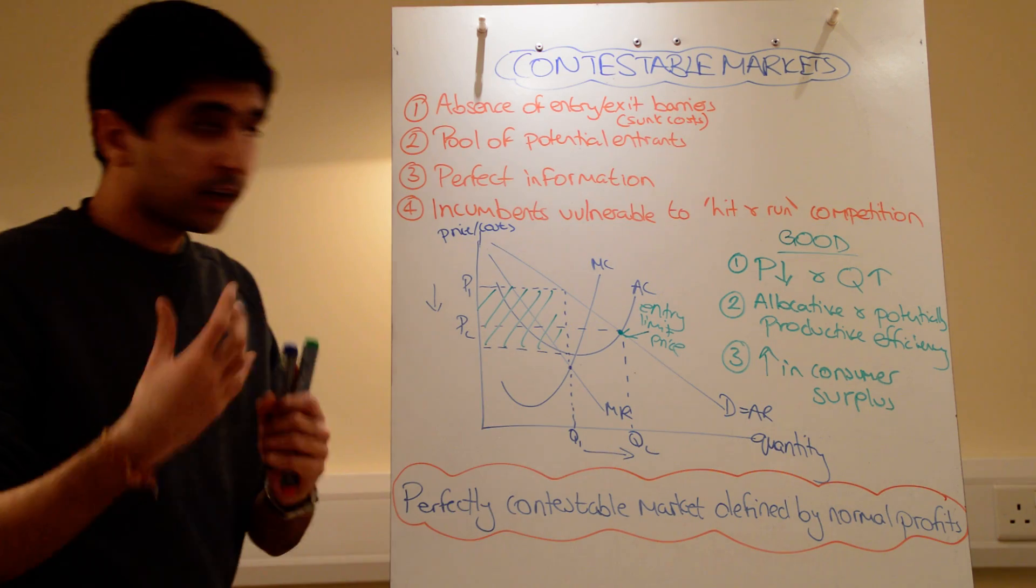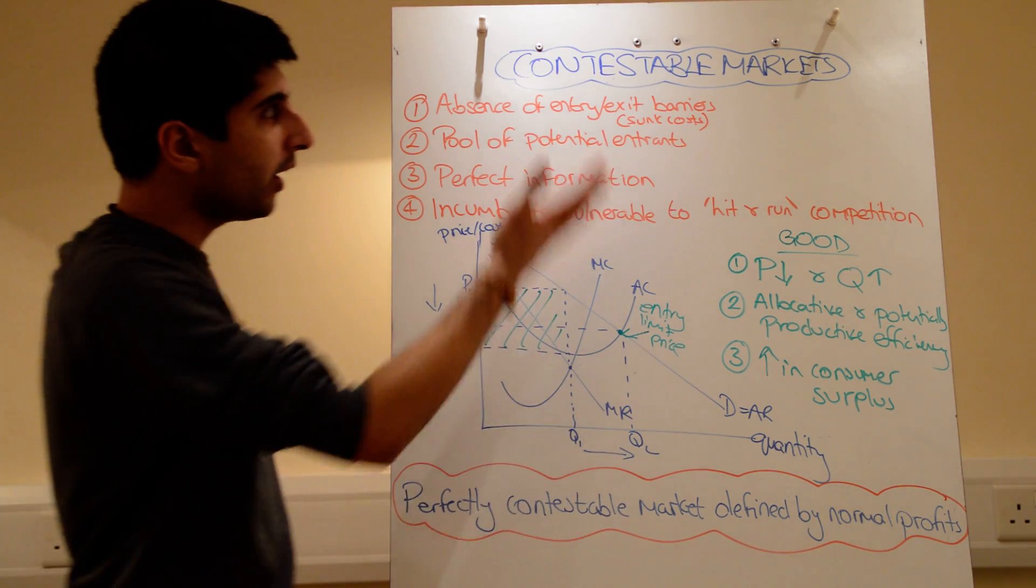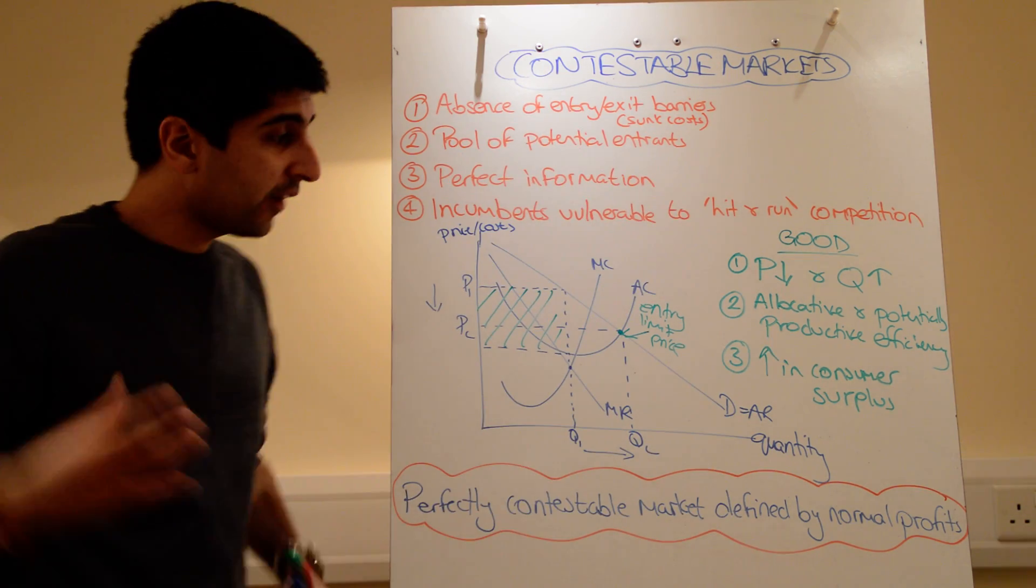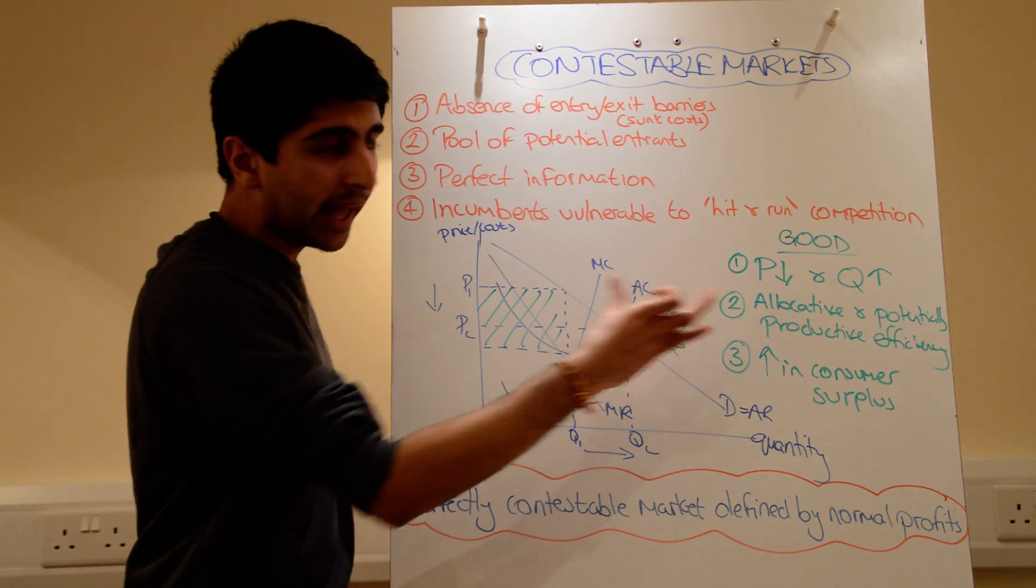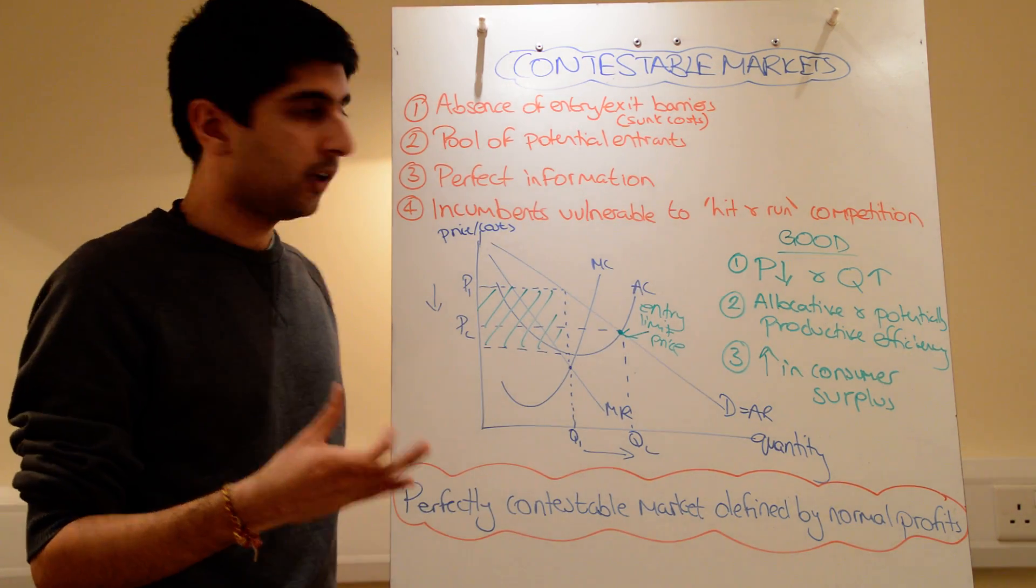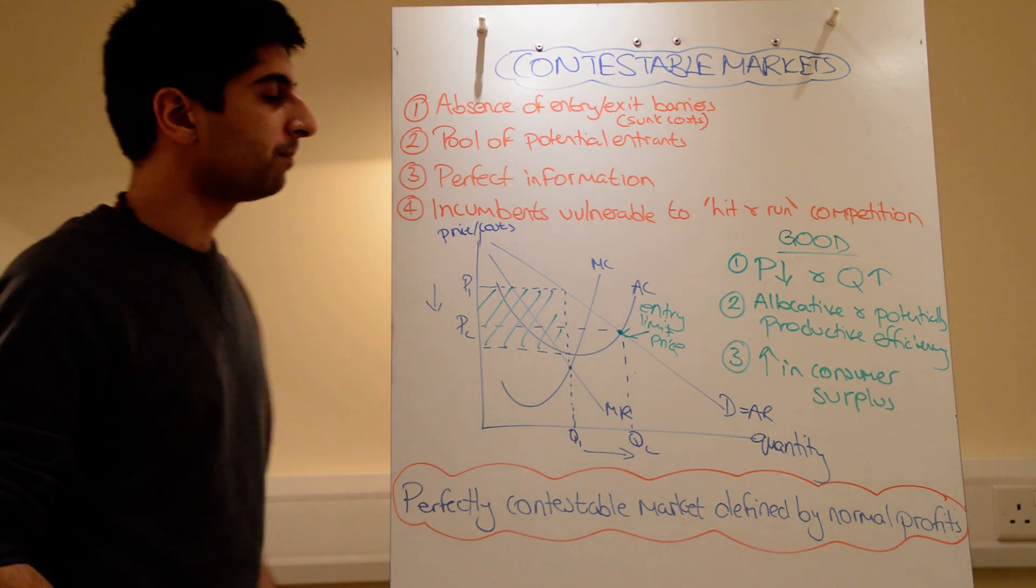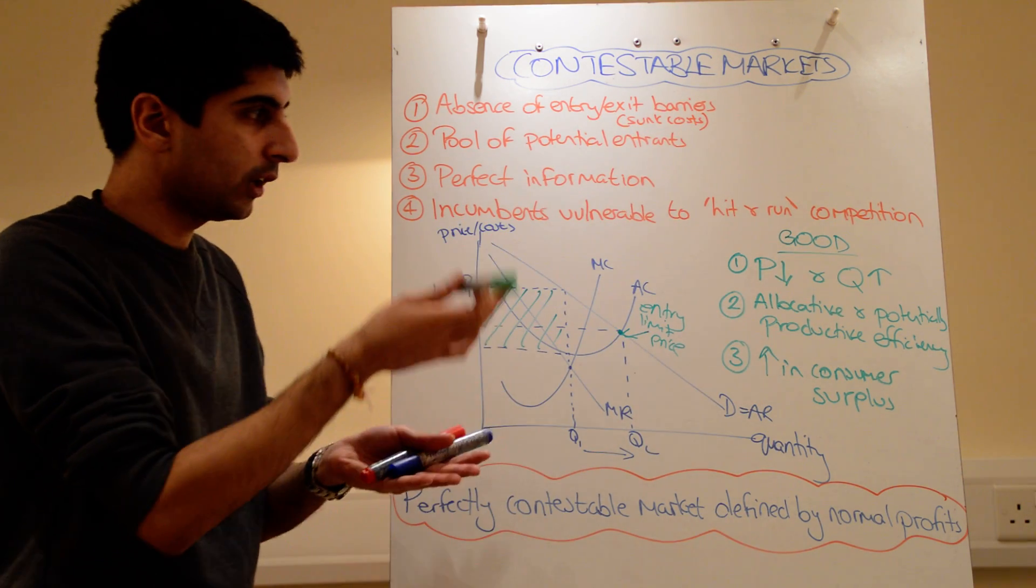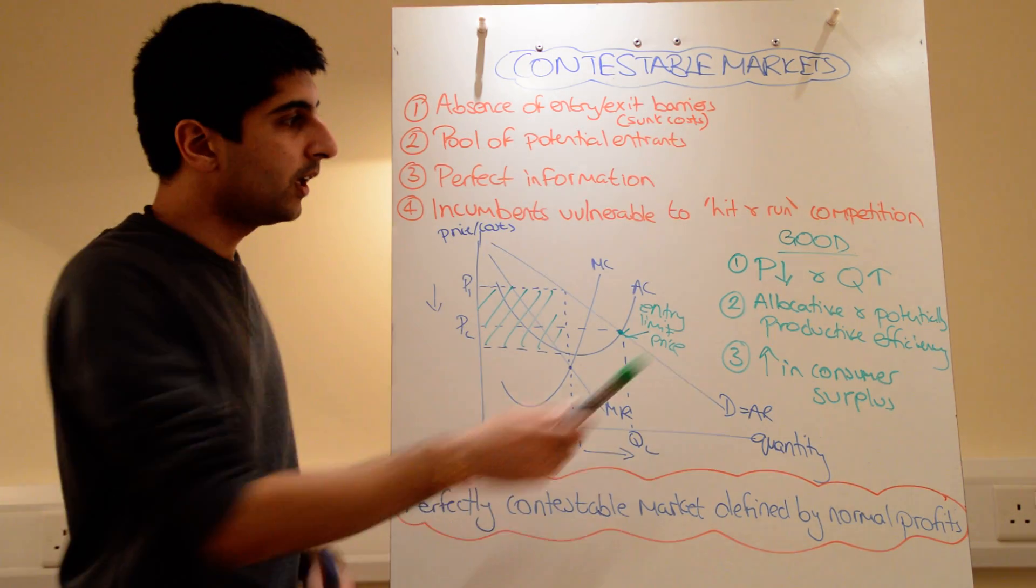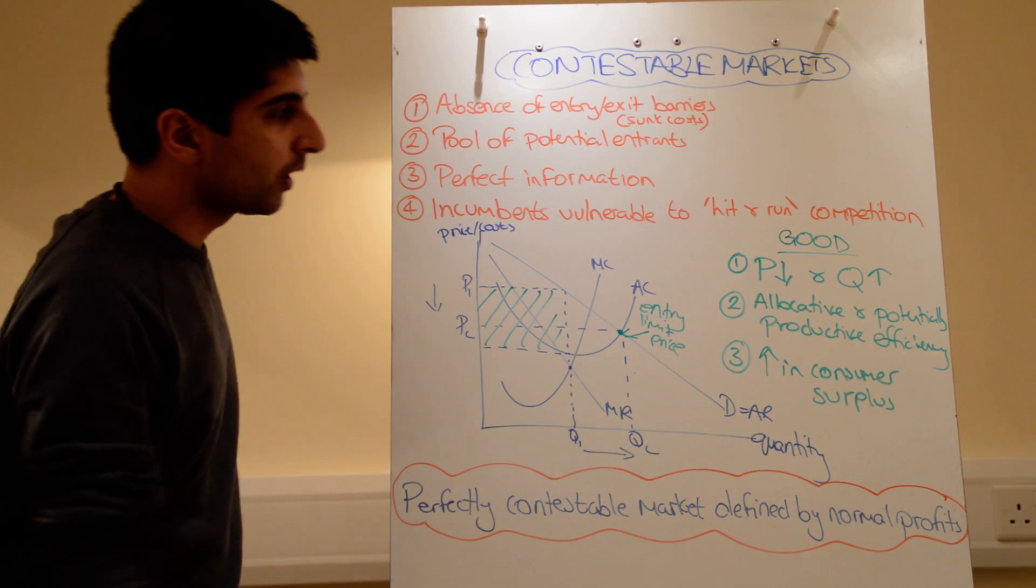Great. Let's now go to evaluation of this. So why are contestable markets good? Well, they're very good. Because the more contestable the markets are, the more the end outcomes are like competitive outcomes, which are very good for society as a whole. So good because prices fall and quantity increases. Greater choice and lower exploitation of consumer welfare. So in that sense, that's very good.